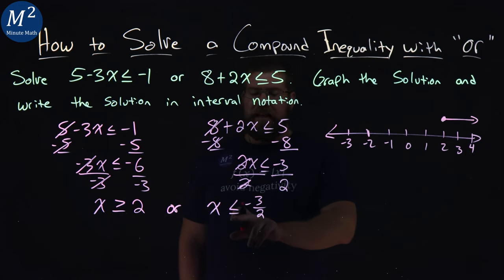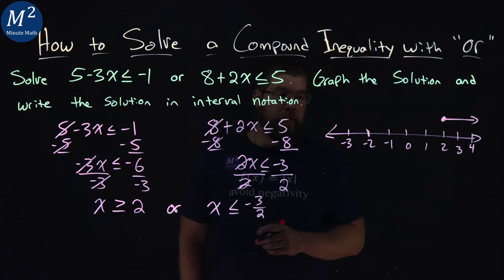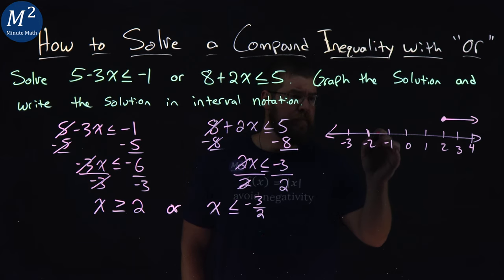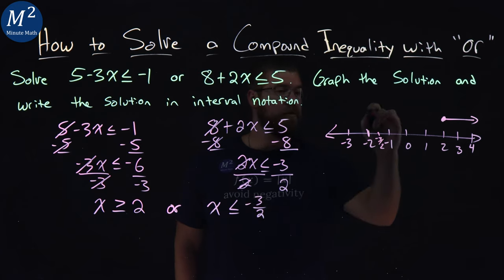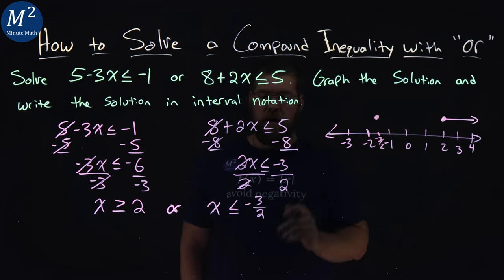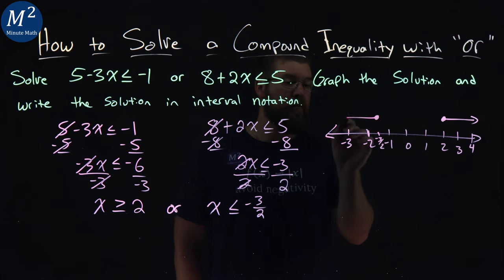Here we have x is less than or equal to negative 3 halves. Negative 3 halves is negative 1 and a half here, right here, negative 3 halves. Again, we have a closed circle there because we can equal that value, but it says x is less than negative 3 halves, so the arrow goes to the left.